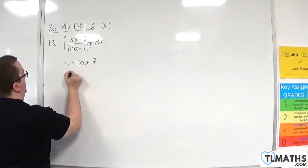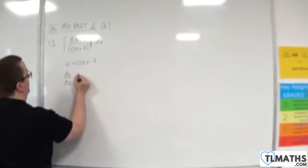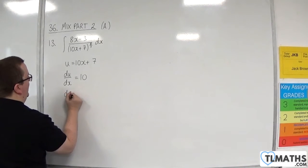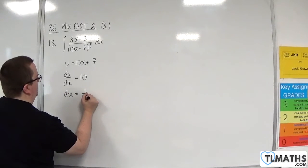So the first thing to do is differentiate the substitution, so du by dx is equal to 10. So then rearrange this to get dx, which will be 1 over 10 du.